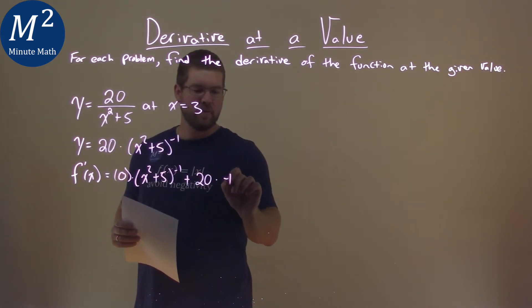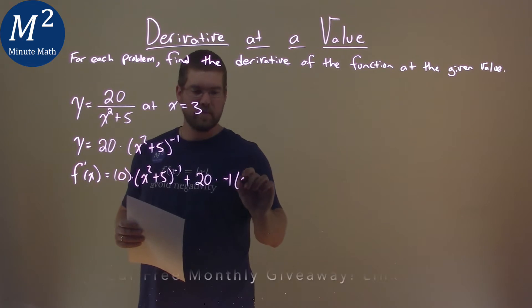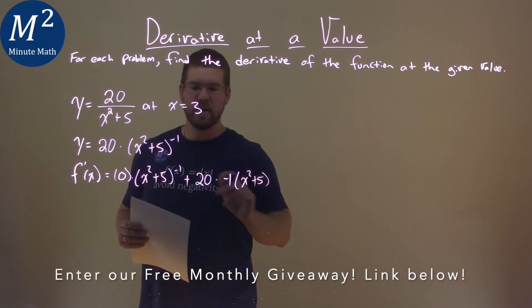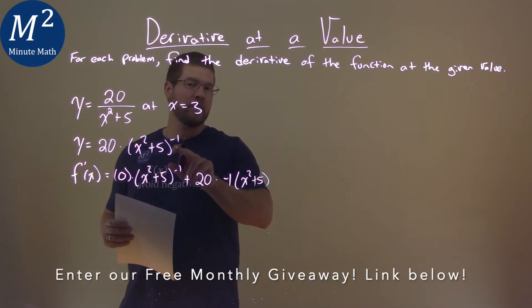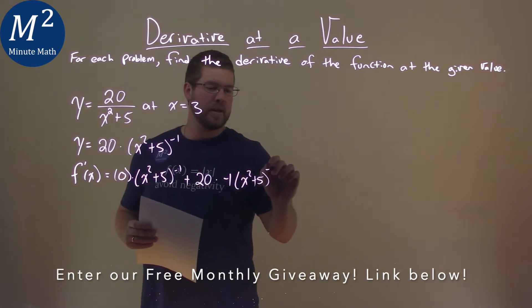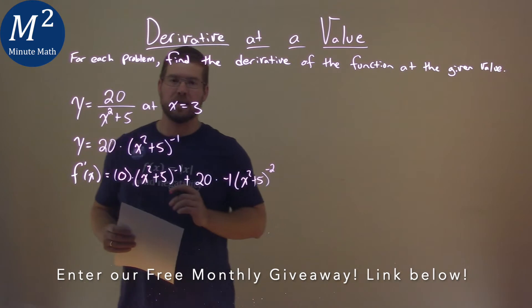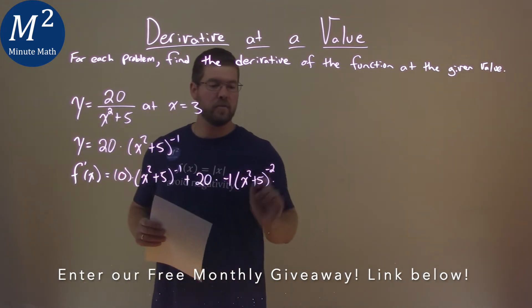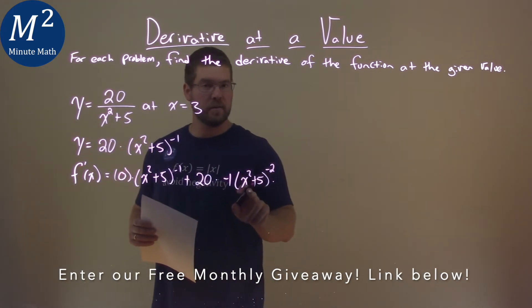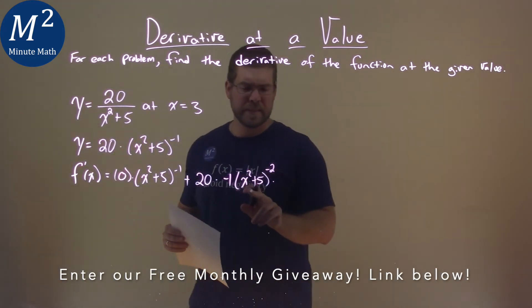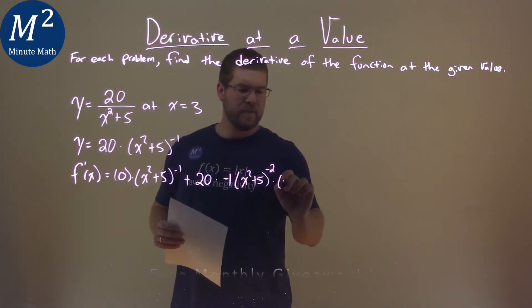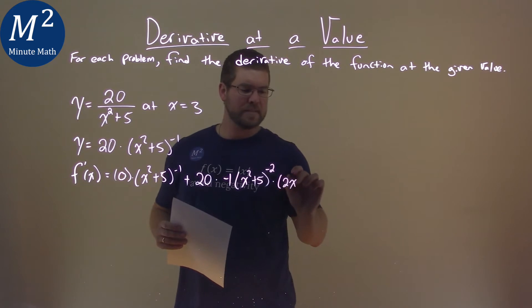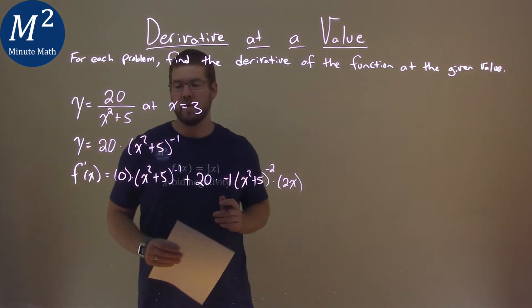The negative 1 comes out front, we have x squared plus 5, and the negative 1 power becomes a negative 2 by subtracting 1. Then the derivative of the inside, using the chain rule, is just 2x.